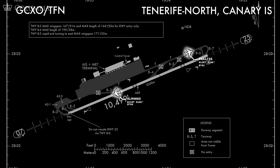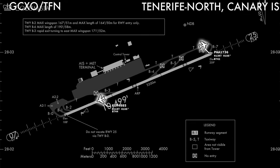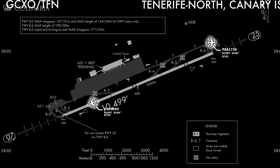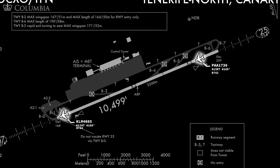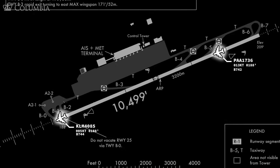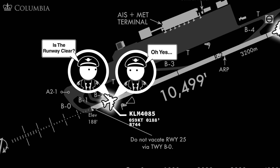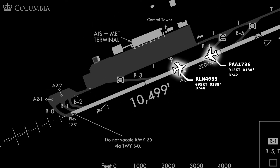In this section, we'd like to spend some time reviewing the origins and history of crisis resource management. In 1977, 583 passengers at Tenerife died after the runway crash of a KLM flight and a Pan Am flight, which occurred because a Dutch crew used ambiguous communication and did not challenge the captain's decision to take off.